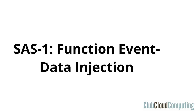The first one is function event data injection, and this is a reincarnation of the SQL injection problem. SQL injection can still happen in serverless as well, but the attack surface is now much wider. There are all kinds of API interfaces that lead into that function that you may have a little less visibility on.